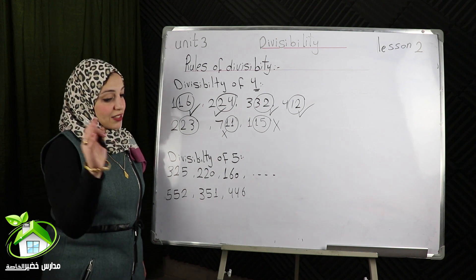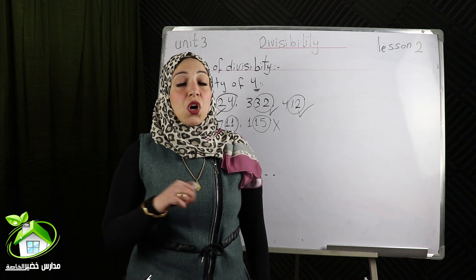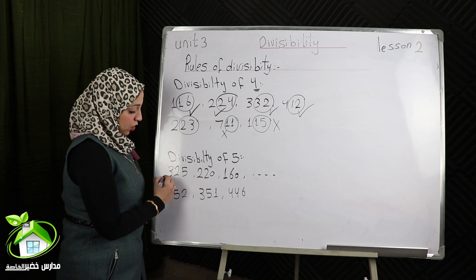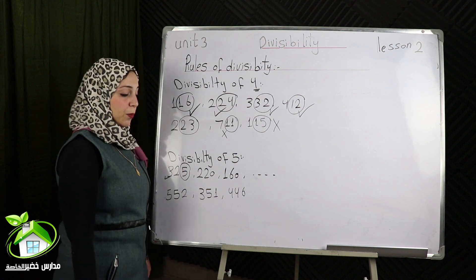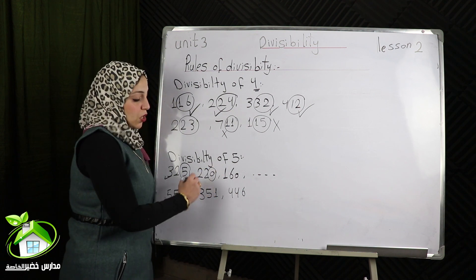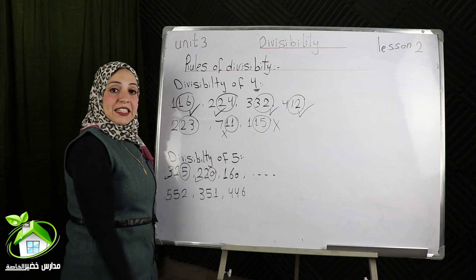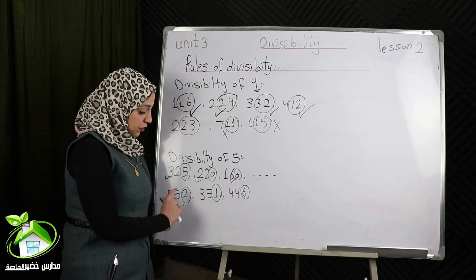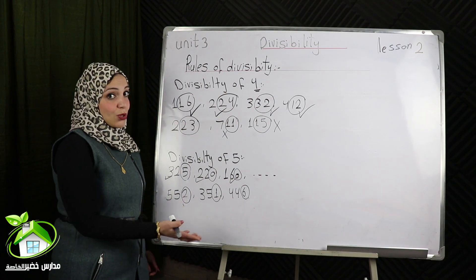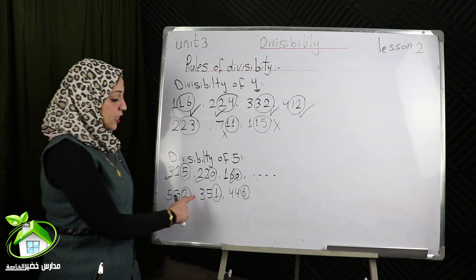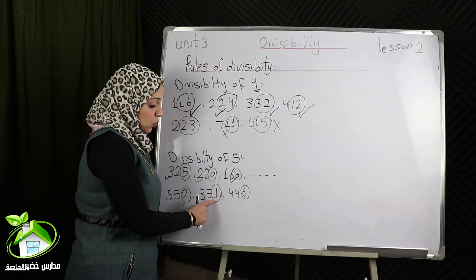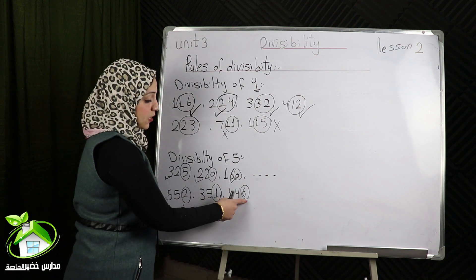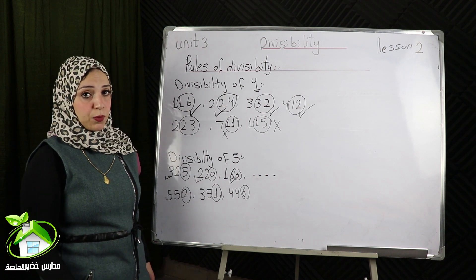Divisibility of 5. As I did in multiples, all the numbers whose units digit equals 0 or 5 are divisible by 5. For example, 325: its unit is 5, so it's divisible by 5. 220: its unit digit equals 0, so it's divisible by 5. 160: its unit digit equals 0, so it's divisible by 5. 552: its unit digit equals 2, so it's not divisible by 5. 351: its unit digit equals 1, so it isn't divisible by 5. 446: its unit digit equals 6, so it isn't divisible by 5.